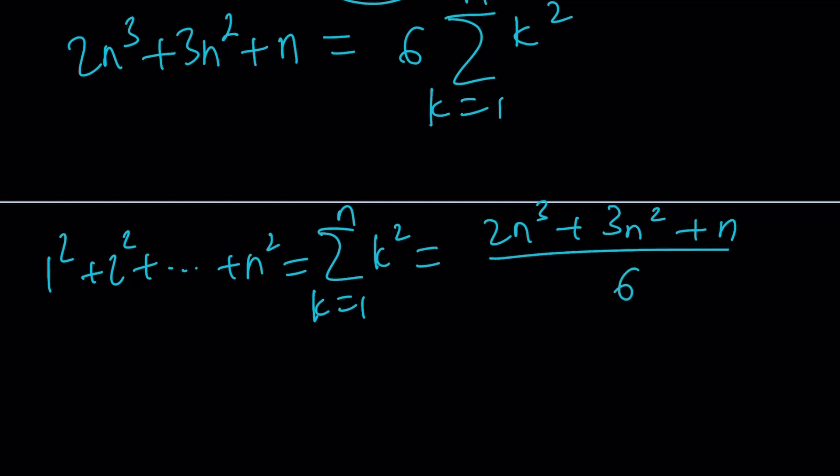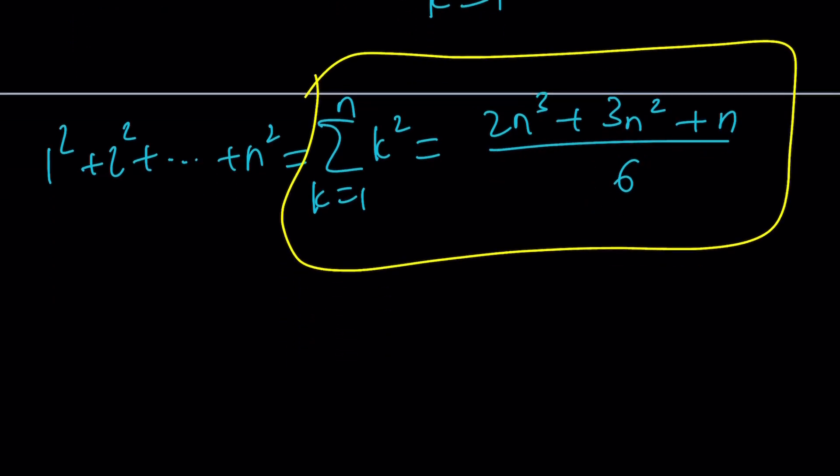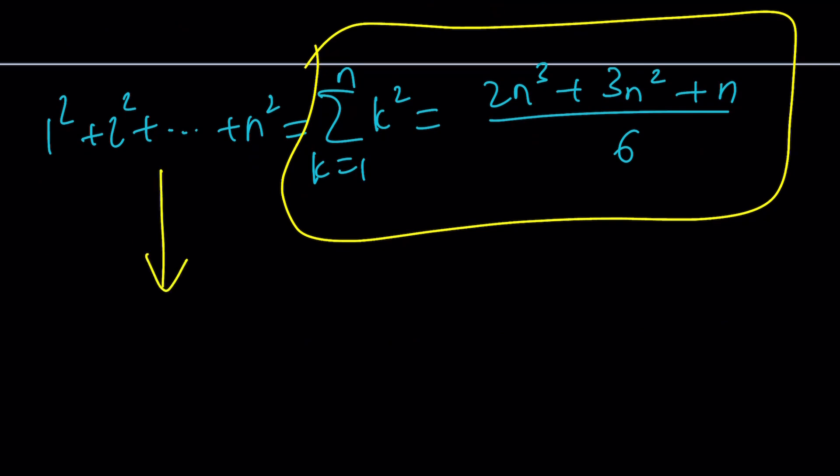And we came up with the formula. So bye-bye, that's it. No no no, we're not done yet because we're still going to simplify this expression, because it's simplifiable. From here we get the following. First of all, you can take out an n: 2n squared plus 3n plus 1 over 6.